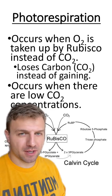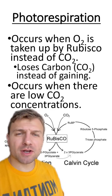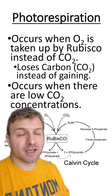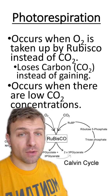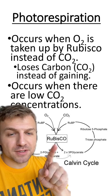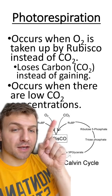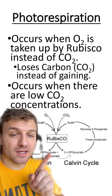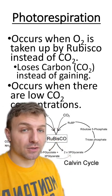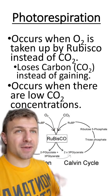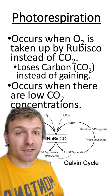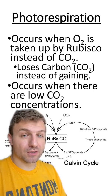Let's talk about photorespiration. Photorespiration occurs when oxygen is taken up by rubisco instead of carbon dioxide. Remember that the enzyme rubisco normally takes up CO2 in the Calvin cycle and produces glucose. These reactions are basically how a plant takes in carbon and produces glucose.